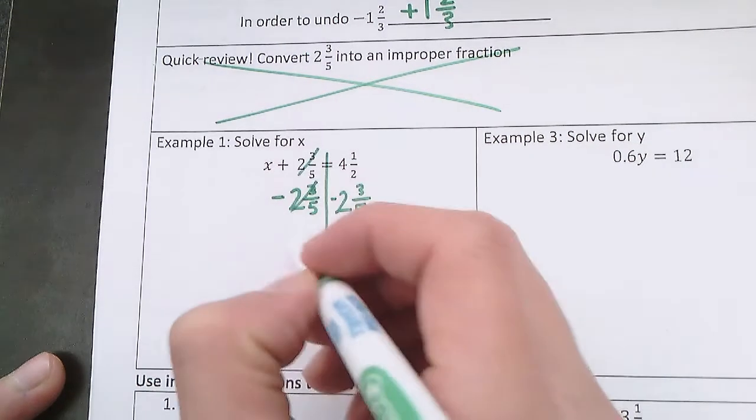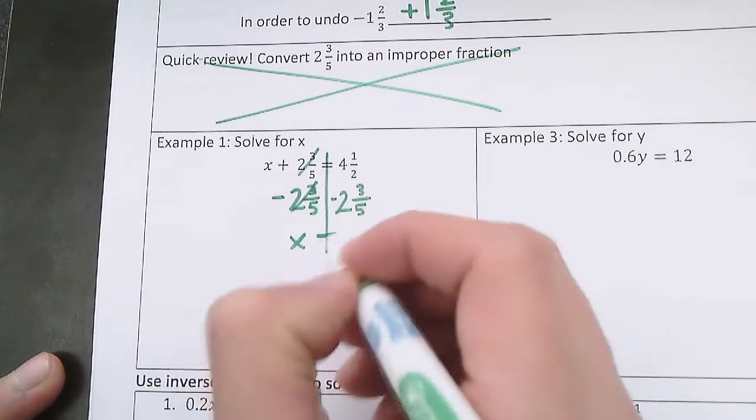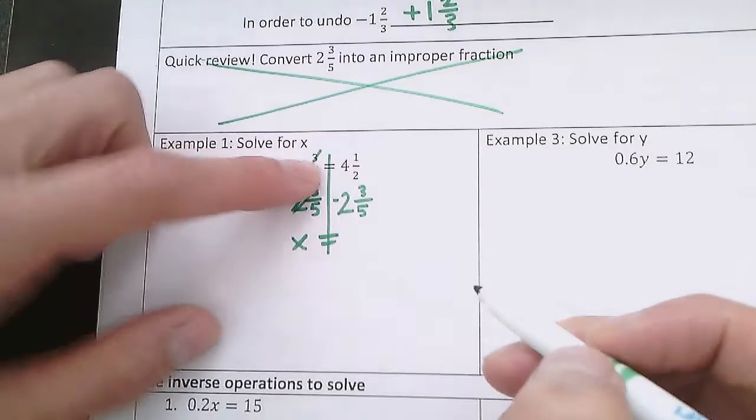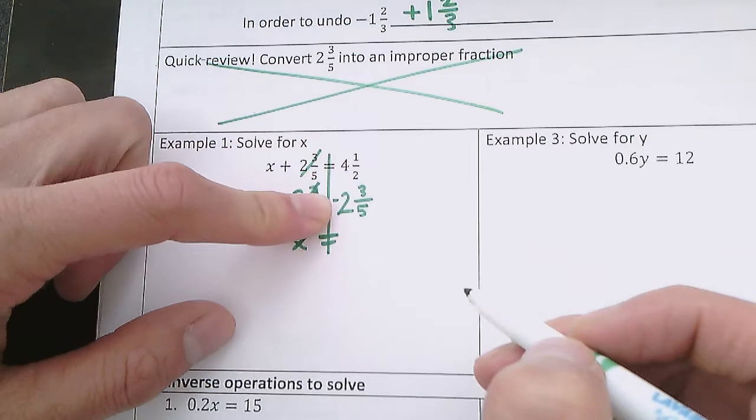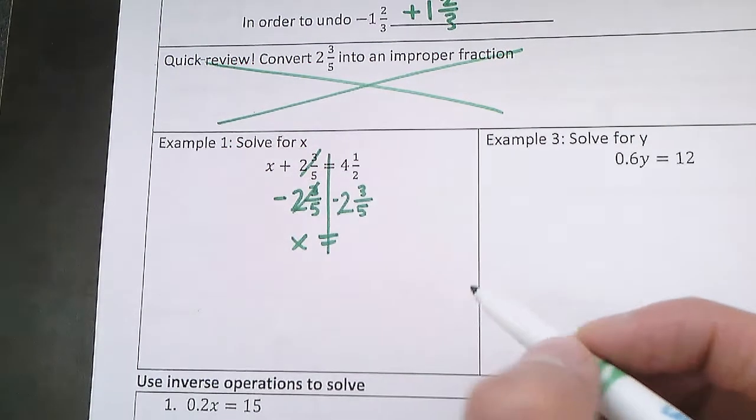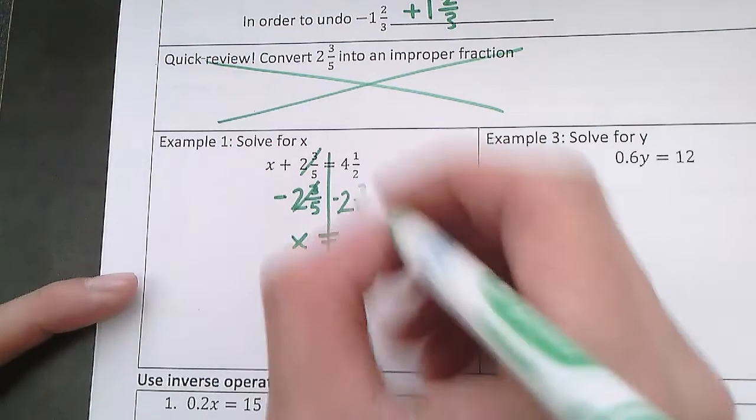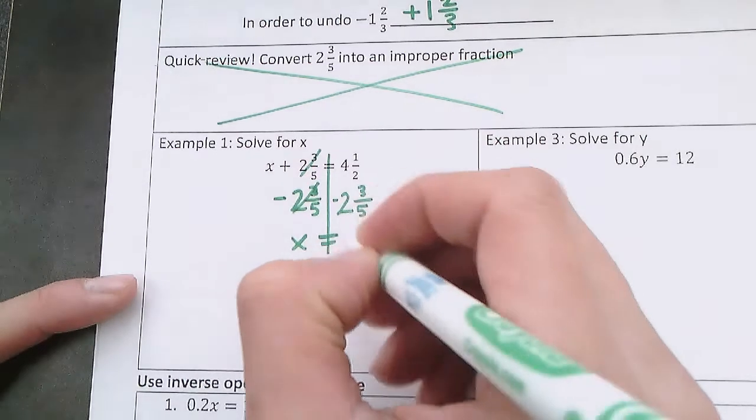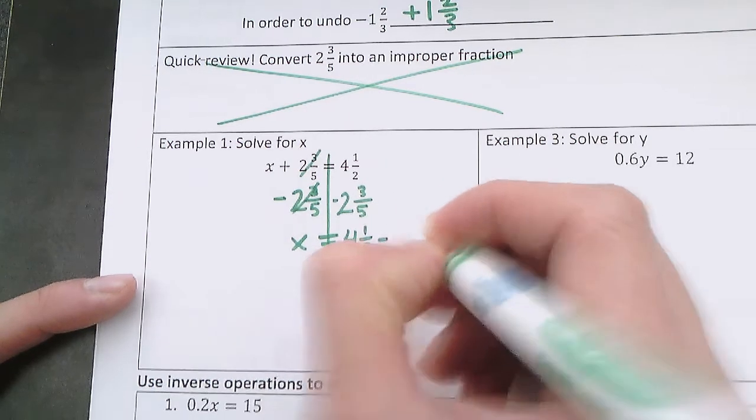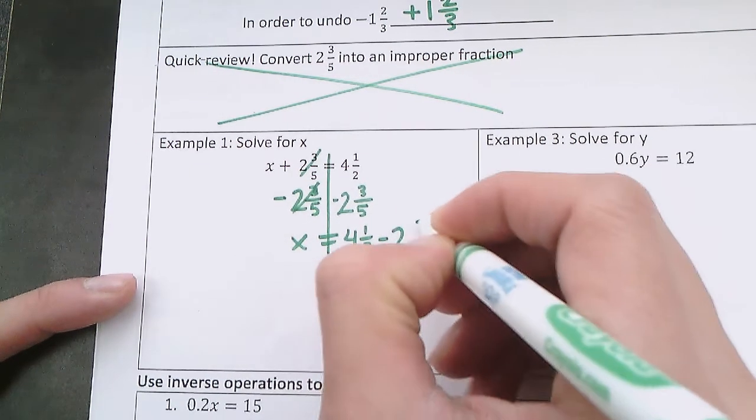And here the 2 and 3 fifths on the left side cancel each other out, so we're just left with x. And this equals, now before we could just do the subtraction in our head with whole numbers, but for this it's mixed numbers, so it's going to be a little more complicated. We want to do 4 and 1 half minus 2 and 3 fifths.